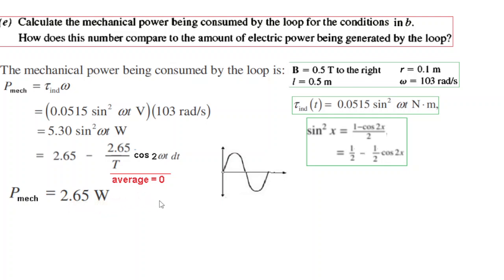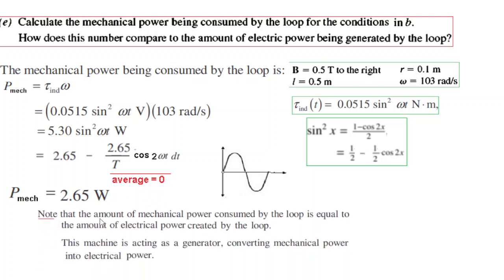So we can write it to be equal to zero. And therefore mechanical power will be equal to 2.65 watt which is equal to the electrical power. So the conclusion we can draw that the amount of mechanical power consumed by the loop is equal to the amount of electrical power created by the loop. Therefore this machine is acting as a generator converting mechanical power into electrical power. For this I have taken help from the solution manual. And thanks to them. I hope you have been able to follow it. Thank you.